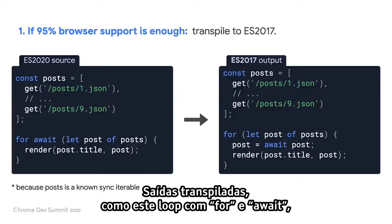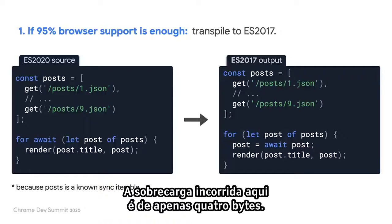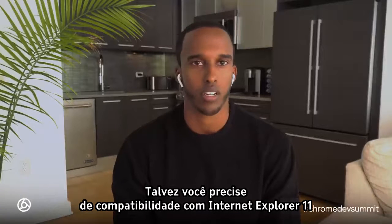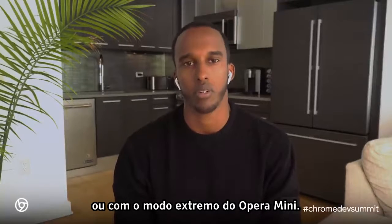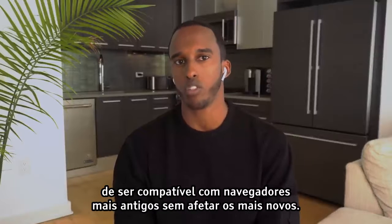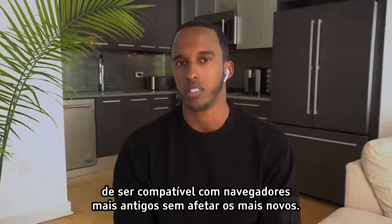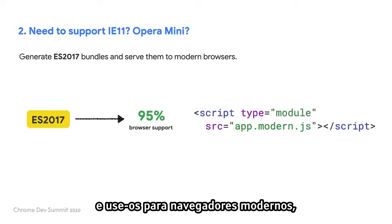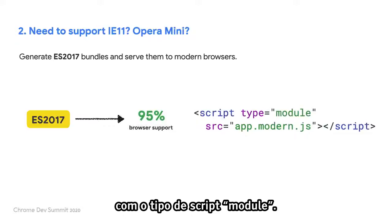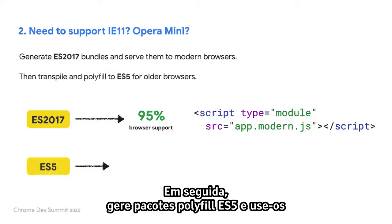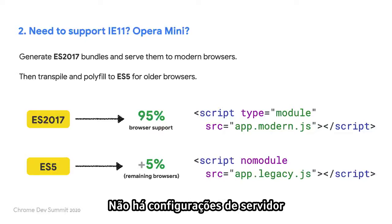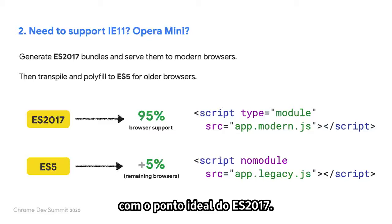Transpiled outputs like this for-await loop are the kind of thing we're looking for — the overhead incurred here is only 4 bytes. But maybe you do need to support Internet Explorer 11 or Opera Mini's extreme mode. Thankfully, there's a really solid way to support older browsers without impacting newer ones. Generate ES2017 bundles for your application and serve those to modern browsers using script type=module. Then generate polyfilled ES5 bundles and serve those to legacy browsers using script nomodule. There's no expensive server setup or user-agent sniffing required, and it lines up really nicely with our ES2017 sweet spot.